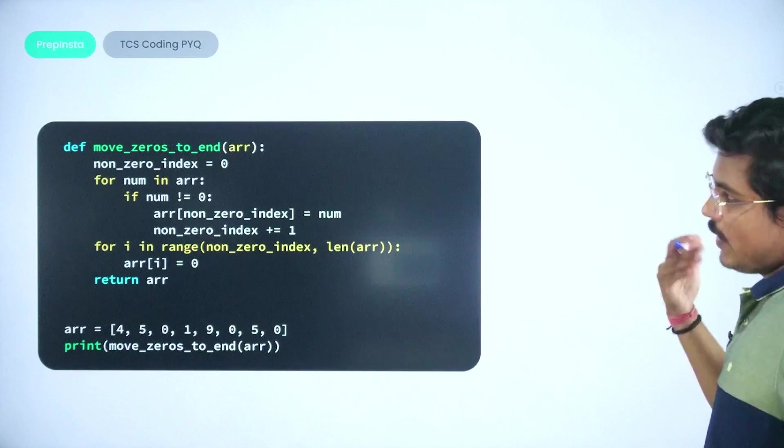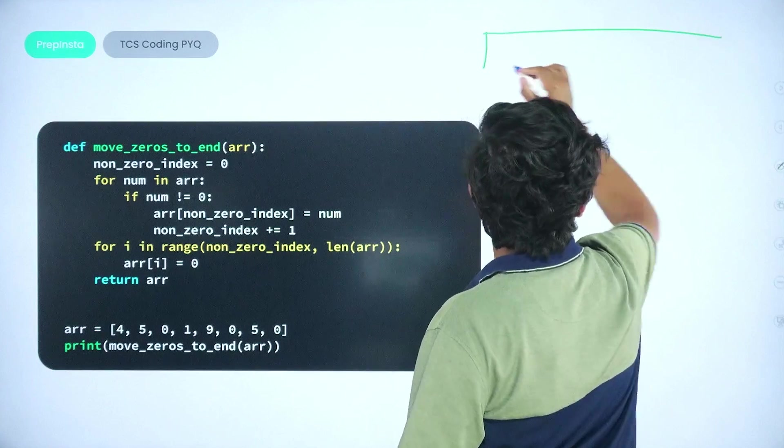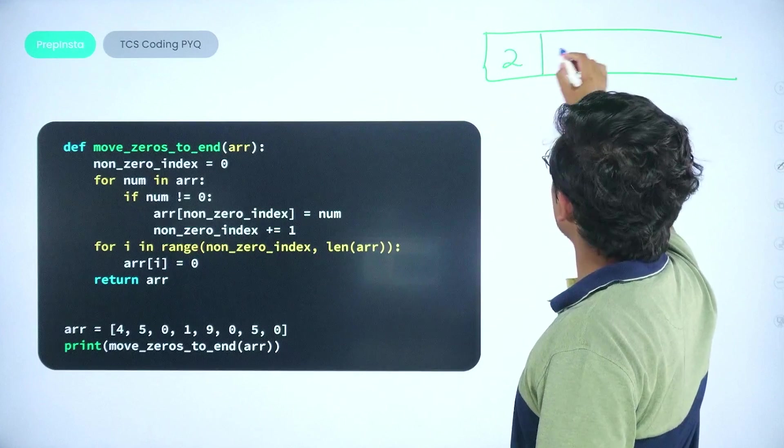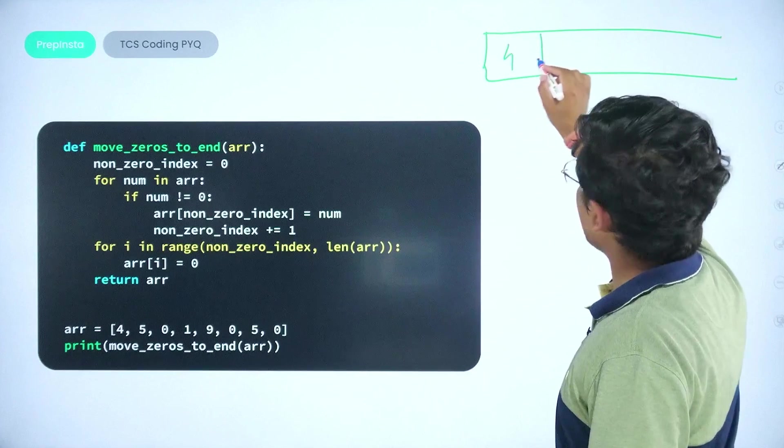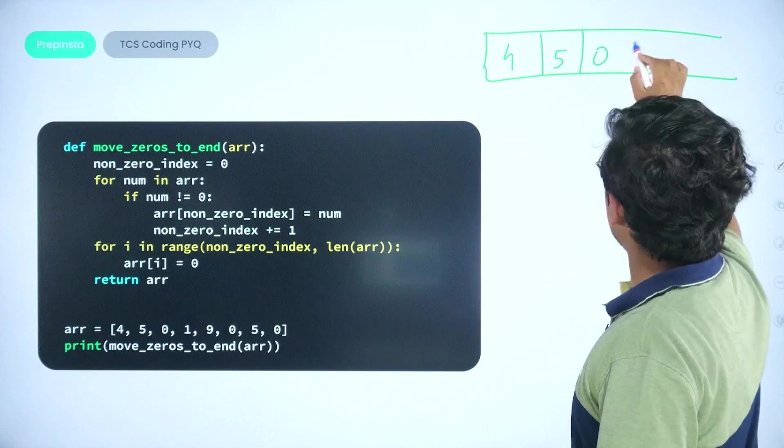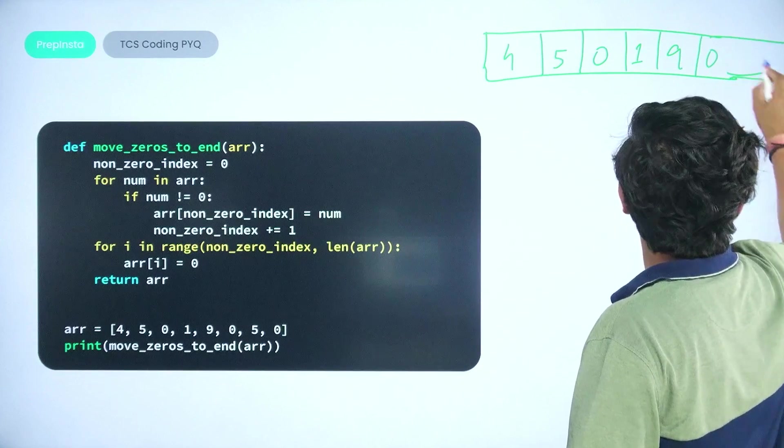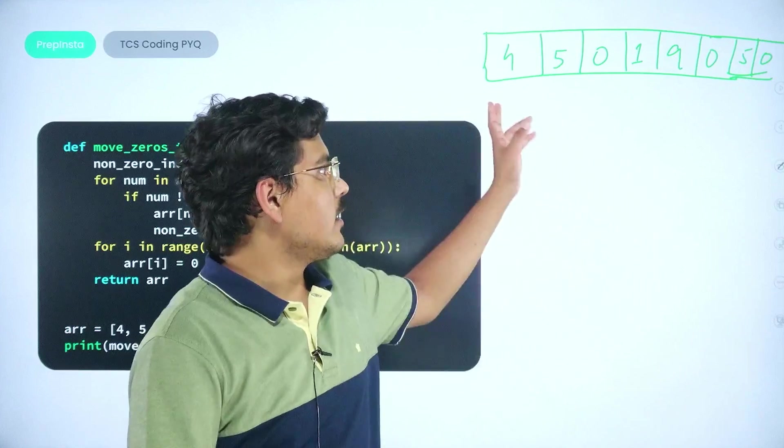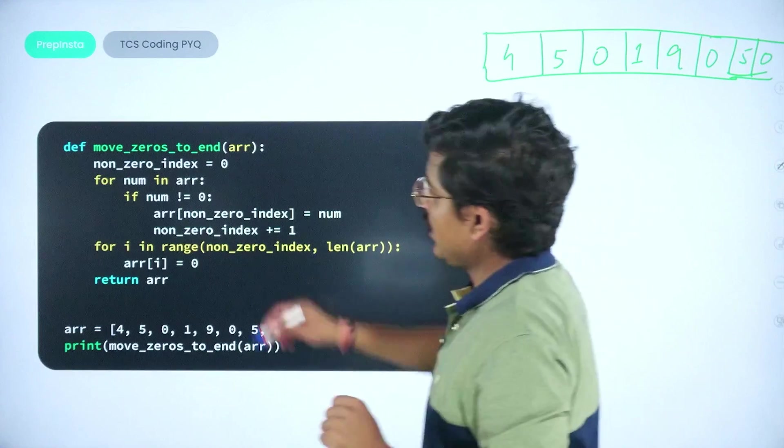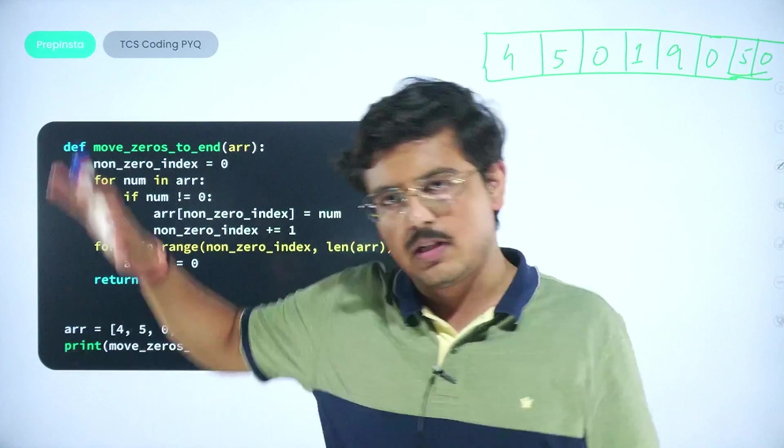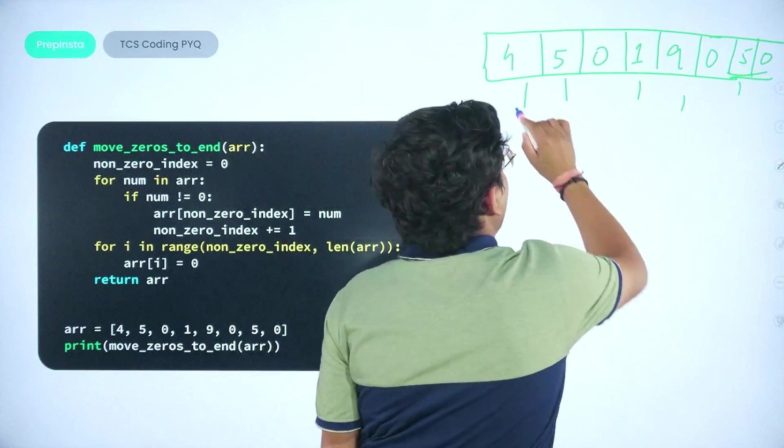What I am trying to tell you is you keep on thinking in this way. For example this is your array, and this array had four, five, zero - let's take this example. So you are having four, then you are having five, then you are having zero, then one, then nine, then again a zero, then a five, and then a zero. This kind of array is actually what is available to you. What we do here is we declare a function. I'll explain you the basic logic first and then we'll go with the code. What I'll do is I'll segregate all these elements out which are non-zero.